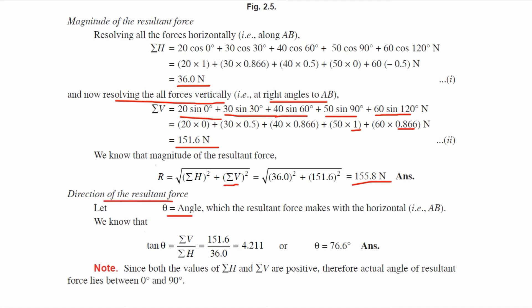For the direction of resultant force, theta is the angle which the resultant force makes with the horizontal. Tan theta equals Sigma V divided by Sigma H, so 151.6 divided by 36 equals 4.211, giving theta equals 76.6 degrees. Since both values are positive, the resultant lies between 0 and 90 degrees, so theta equals 76.6 degrees.